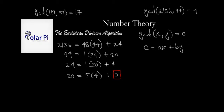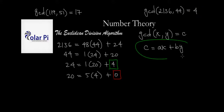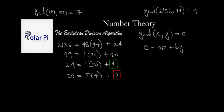Then: 20 = 5×4 + 0. The process terminates because we've written a remainder of zero. The greatest common divisor is the remainder from the previous step, which is 4.